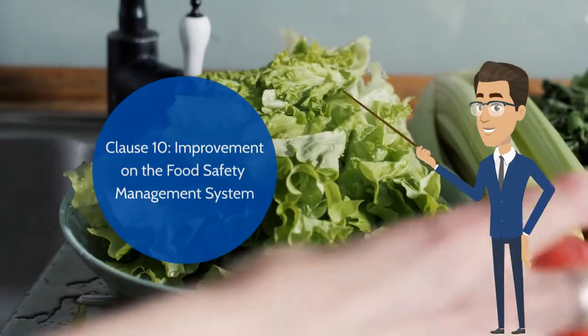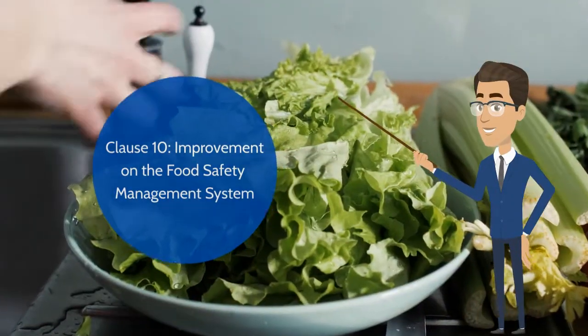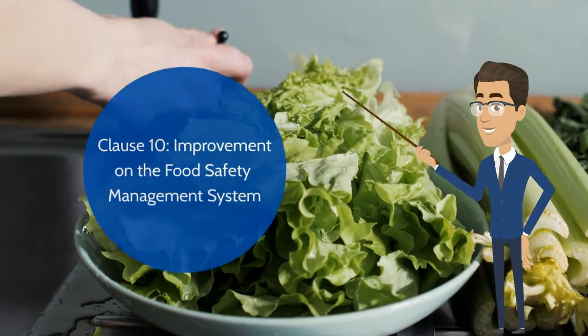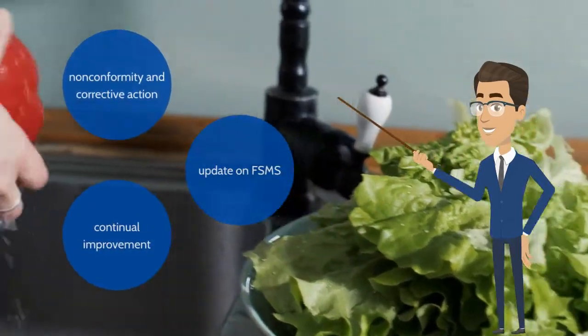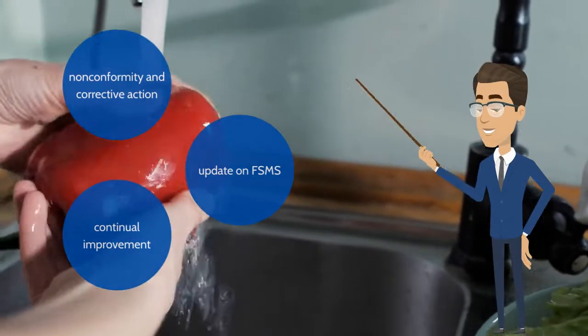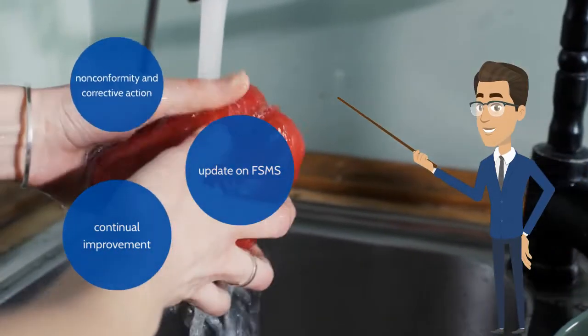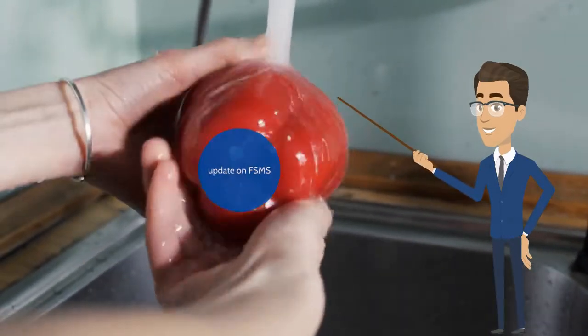Lastly, Clause 10 is improvement on the food safety management system. The organization needs to act on nonconformity and corrective action, continual improvement, and updates on the food safety management system.